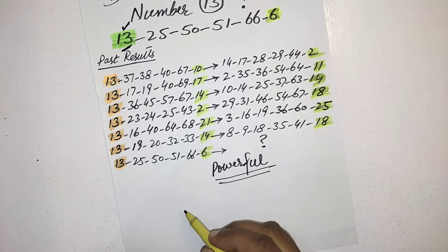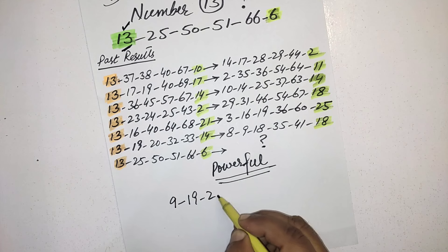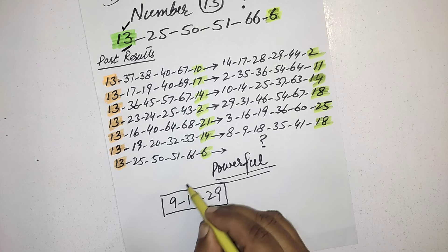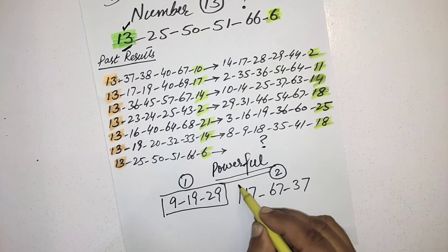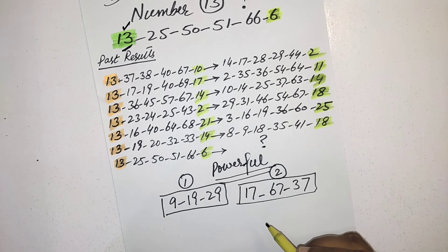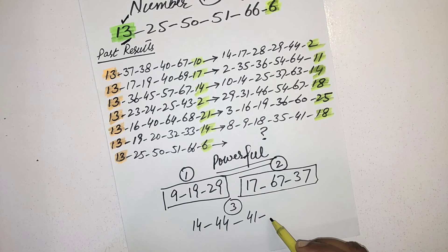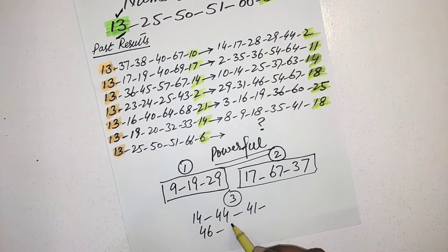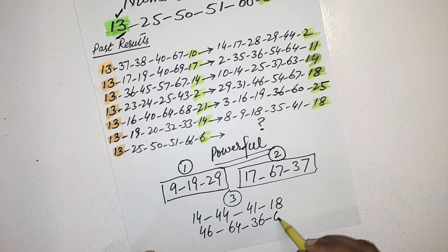I will give here three boxes. You should select your all six numbers from here. First of all 9, 19, and 21, this is number one. Second one is 17, 67, and 37. And last one, this is most important: 14, 44, 41, 46, 64, 36, 18, and 63.